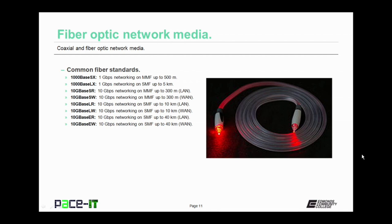10GBase-LR is 10 gigabits per second networking on single mode fiber spanning up to 10 kilometers, and it comes with a LAN type connector. Then there's 10GBase-LW, 10 gigabits per second on single mode fiber up to 10 kilometers, using a wide area network type connector. 10GBase-ER is 10 gigabits per second on single mode fiber up to 40 kilometers with a LAN connector. Finally, 10GBase-EW is 10 gigabits per second on single mode fiber spanning up to 40 kilometers using a wide area network connector.